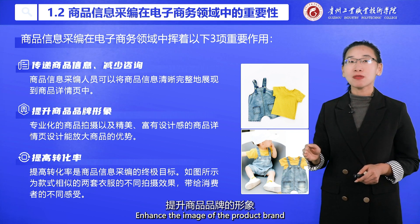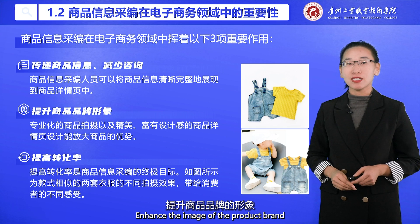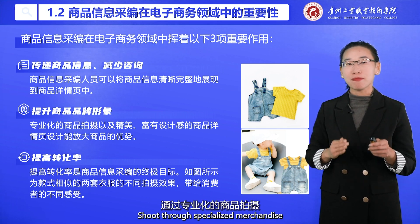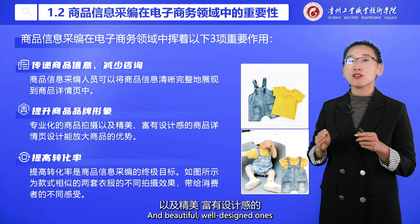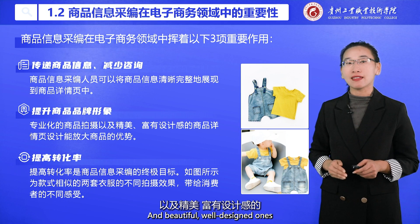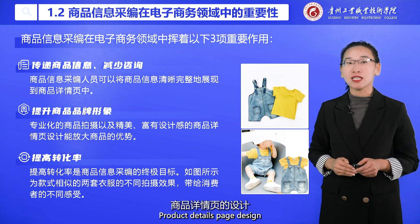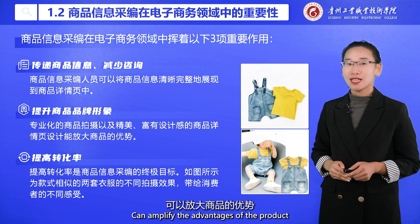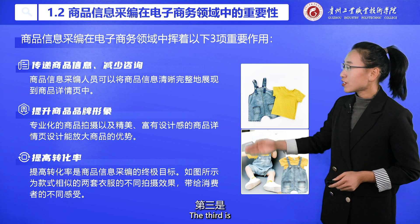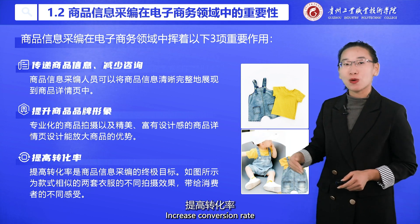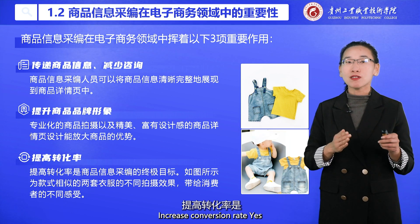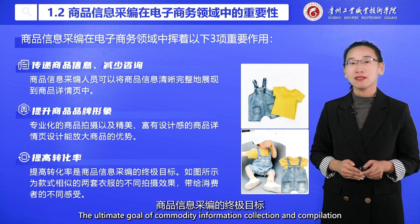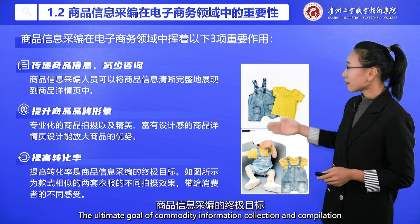The second point is to enhance the image of the product brand. Through specialized merchandise shooting and beautiful, well-designed product details page design, you can amplify the advantages of the product. The third point is to increase conversion rate, which is the ultimate goal of commodity information collection and compilation.